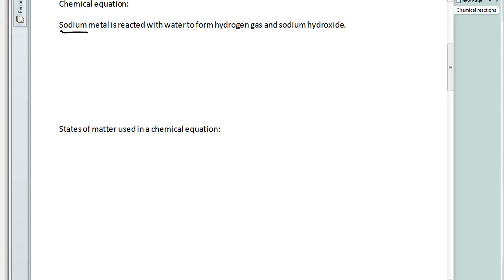It says sodium metal is reacted with water to form hydrogen gas and sodium hydroxide. Let's write this out using the symbols associated with each one of these things. We'll start off with sodium metal. Sodium metal has a symbol of Na. It's reacted - anytime we react something with something else, we're going to separate those by a plus sign. It's reacted with water, and the formula for water is H2O.